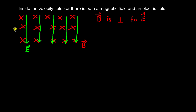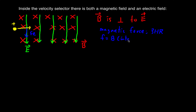If a positively charged particle is sent into the velocity selector with a velocity, it will experience an electric force in the direction of the electric field — in this case, downwards. It will also experience a magnetic force. We can determine the direction of the magnetic force using the right-hand rule. We point our fingers in the direction of the magnetic field, which is into the page, and our thumb in the direction of the particle's velocity, which is to the right. We use our right hand because it's a positively charged particle. The palm of our hand points upwards, so the magnetic force opposes the electric force and pulls the particle upwards.